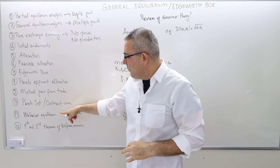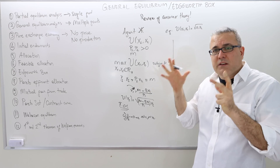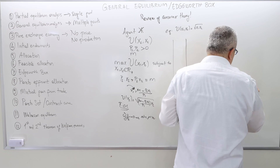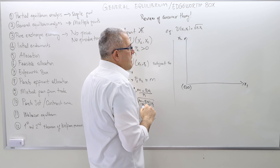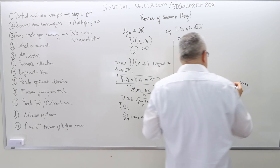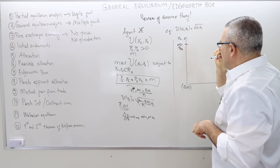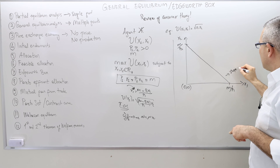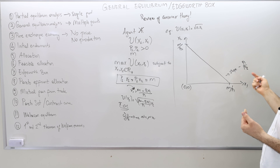We will use all of that when I talk about Walrasian equilibrium. Graphically, we draw the budget curve — we put X1 on the horizontal axis and X2 on the vertical axis. The budget curve is P1·X1 + P2·X2 = M. The horizontal intercept is M/P1 and the vertical intercept is M/P2. Therefore, the budget curve is a straight line with slope −P1/P2.